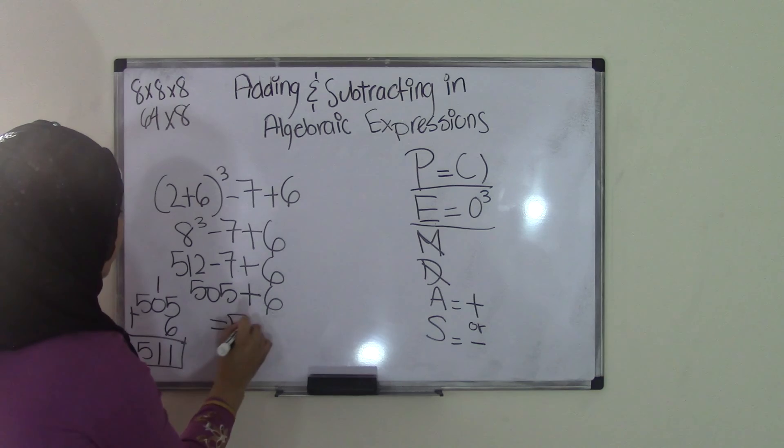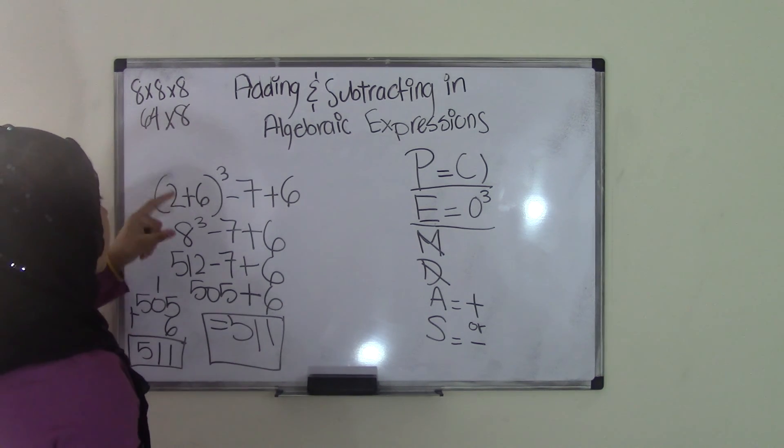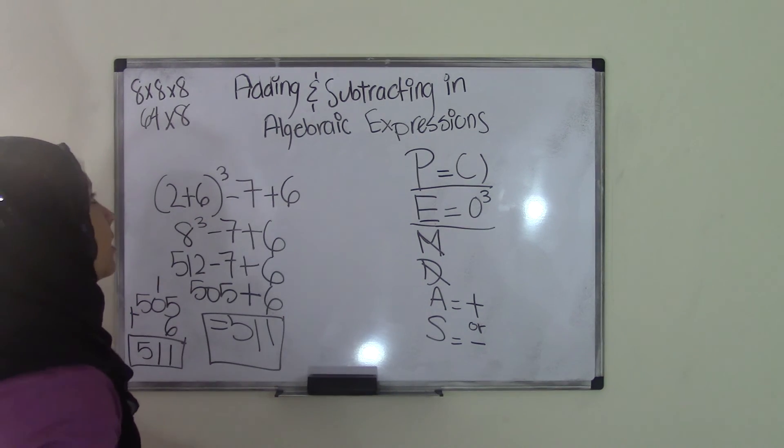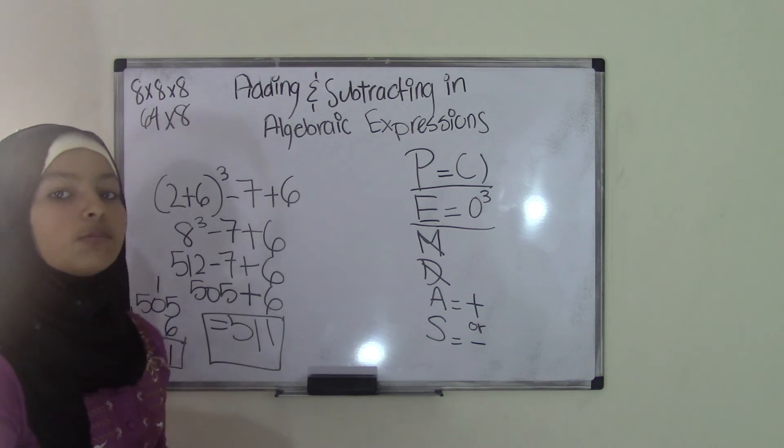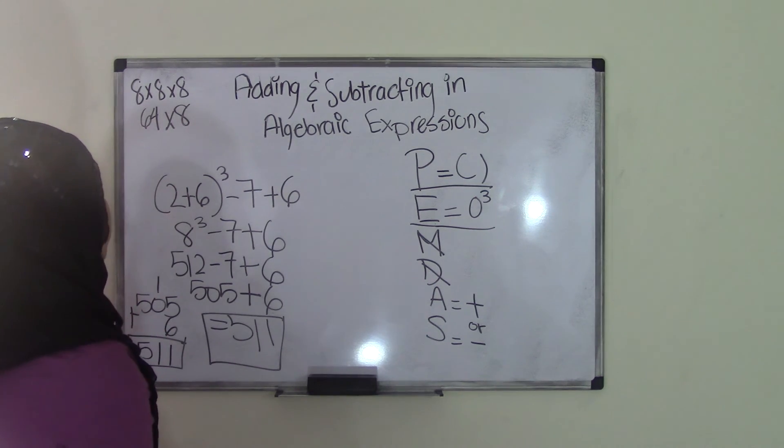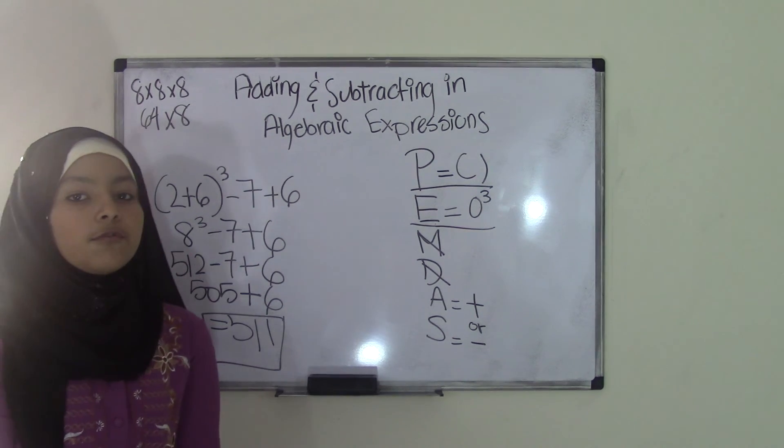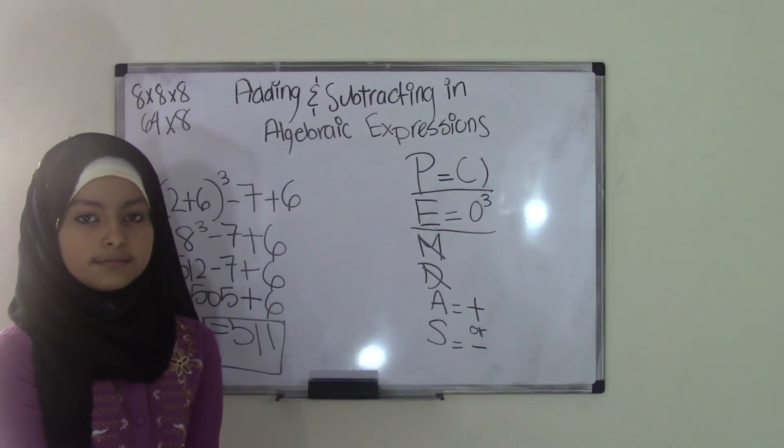And 511 is our solution for (2+6) to the power of 3 minus 7 plus 6. So that's that for adding and subtracting in algebraic expressions. And if you guys want to find more practice problems, you can always visit our website at www.bromacistmathclub.com. We'll see you guys next time. Bye.